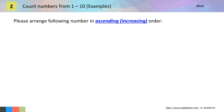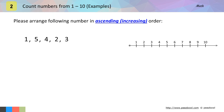In this example we need to arrange numbers in ascending order, or increasing order, which means that we need to write the smallest number first and the largest number later. We will refer to the number line and highlight all the numbers we see here on the number line.